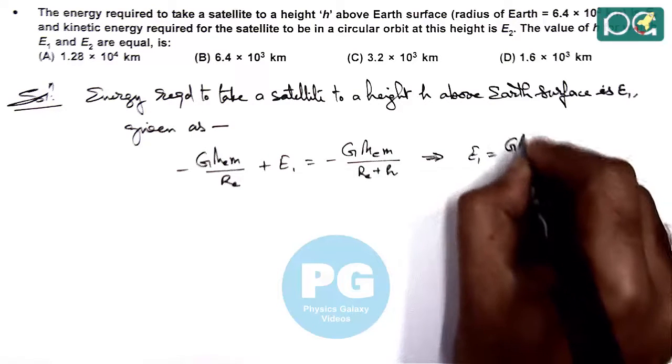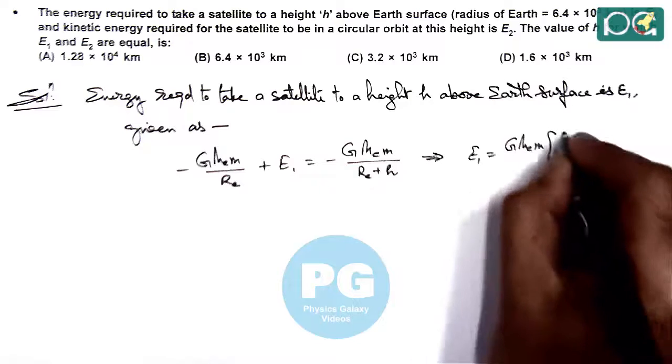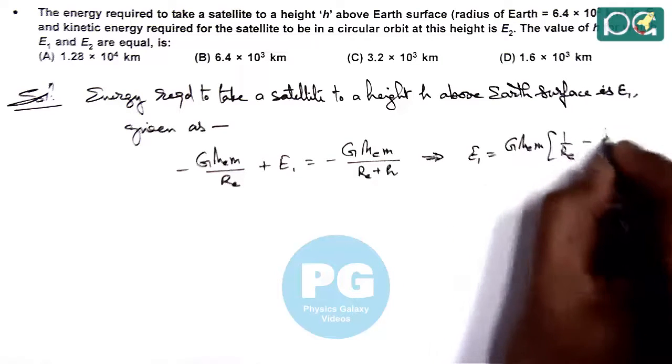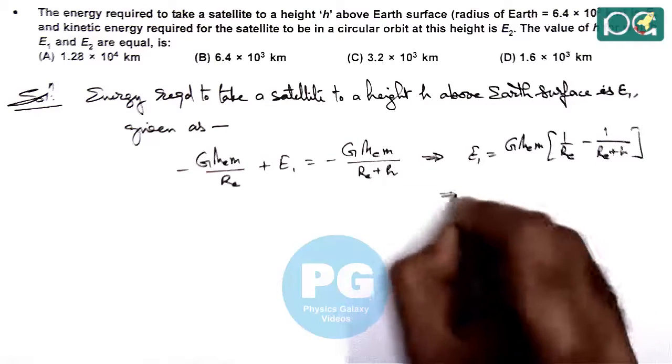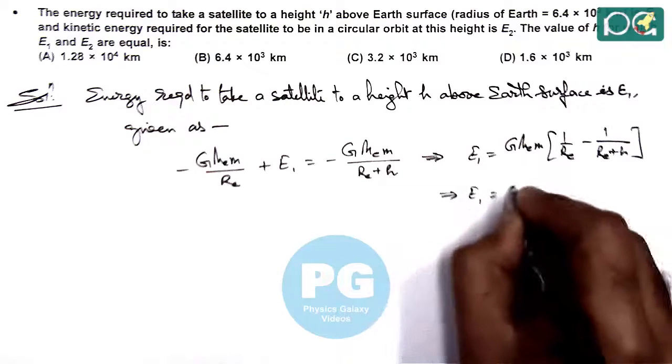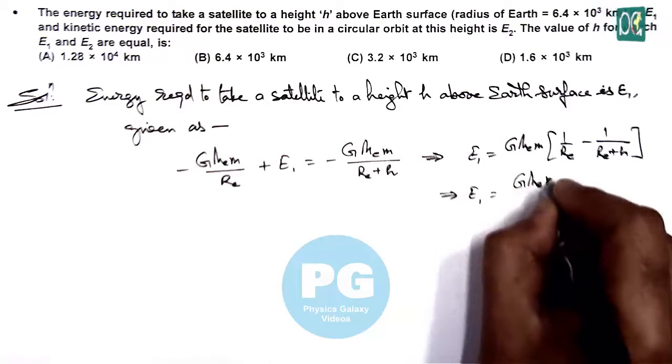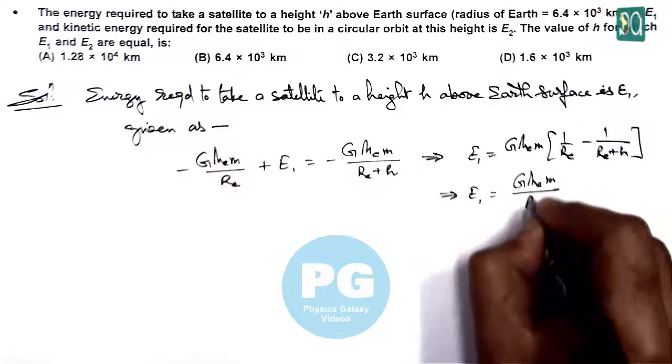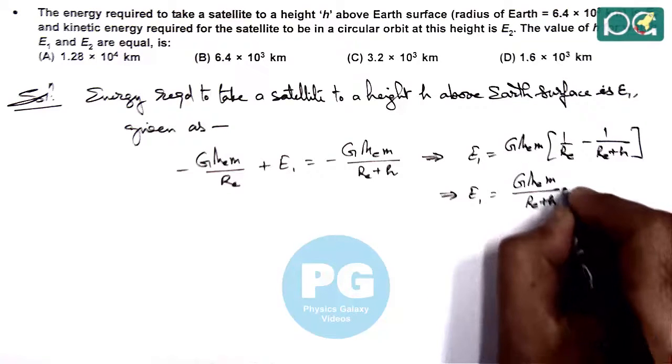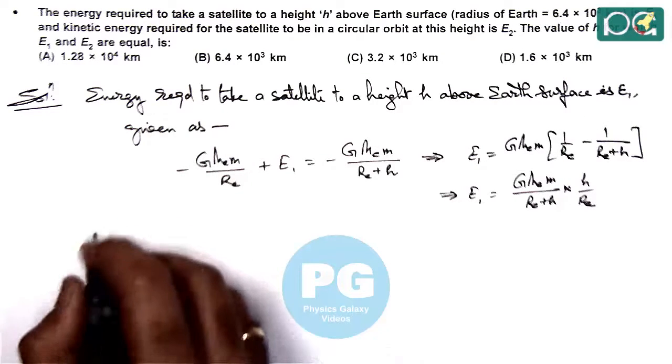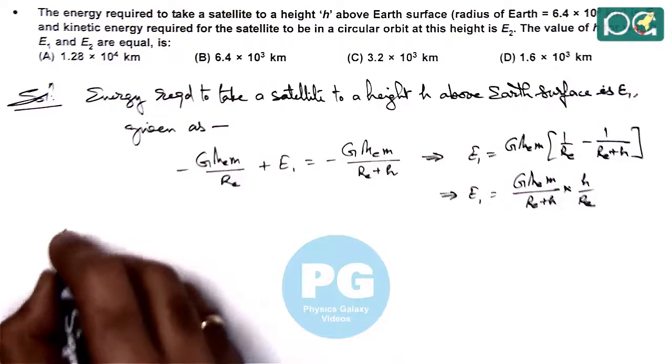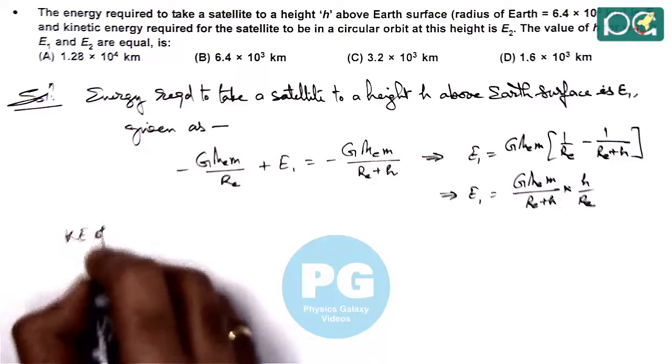which is GmEm multiplied by (1/Re minus 1/(Re+H)). This gives us E1 equals GmEm/(Re+H) multiplied by H over Re.